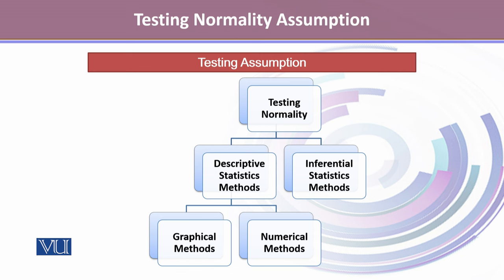When we are carrying out the test for normality, the methods can be divided into two categories: descriptive statistics methods and inferential statistics methods. In the descriptive statistics method, we will talk about some graphical methods and some other numerical methods to make a decision whether there is normality or not. We will also talk about inferential statistical methods.